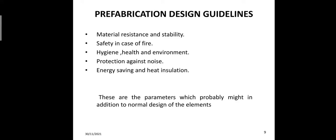Prefabrication design guidelines cover: material resistance and stability, safety in case of fire, hygiene, health and environment, protection against noise, energy saving and heat insulation. These are the parameters which are probably considered in addition to the normal design of elements.